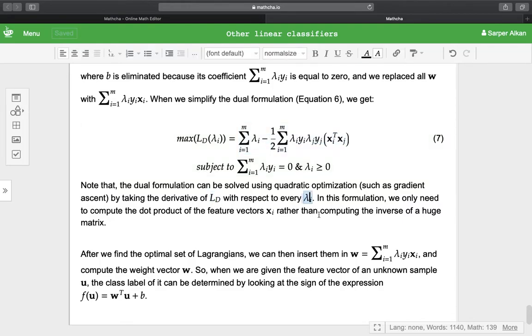In this formulation, we only need to compute the dot product of the feature vectors xᵢ and xⱼ rather than computing the inverse of a huge matrix. After we find the optimal set of Lagrangians, we can insert them into the equation W = Σ(i=1 to m) λᵢyᵢxᵢ and compute the weight vector W.